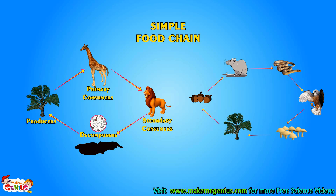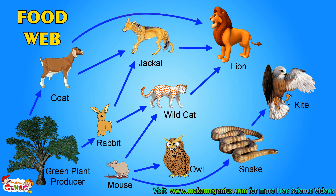Actually, life is not so simple. Look at this picture. This is very complex. Look at the rat. It can be eaten by a cat, or it may be eaten by a snake. A plant can be eaten by a goat or by a rabbit. These kinds of complex food chains are called food webs, as they are very interconnected, like a spider web.